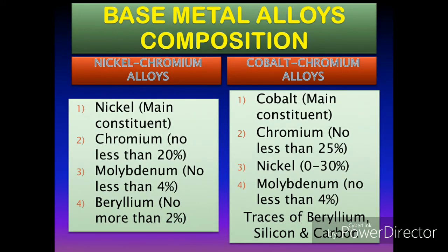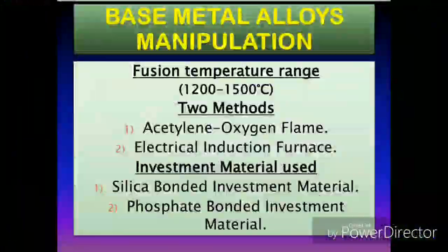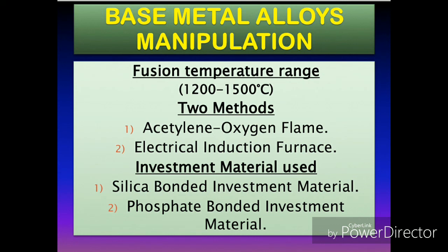The main purpose of chromium is to further harden the alloy and it also imparts corrosion resistance by passivating effect to the cobalt-chromium casting alloy. Now let's talk about the manipulation of base metal casting alloys.